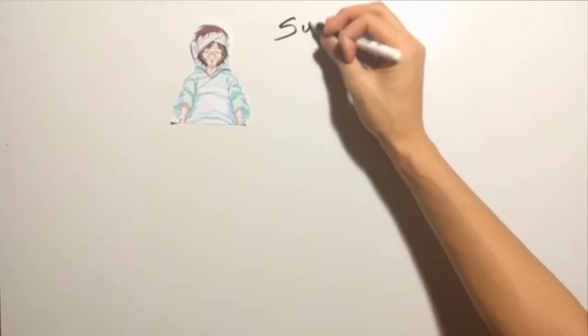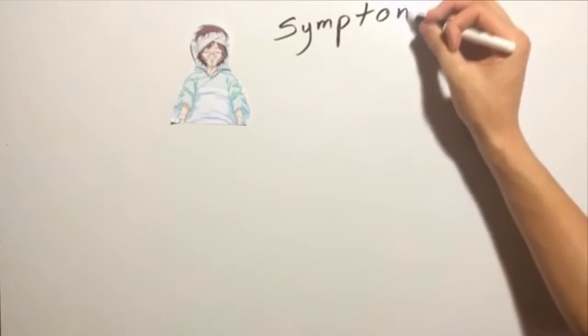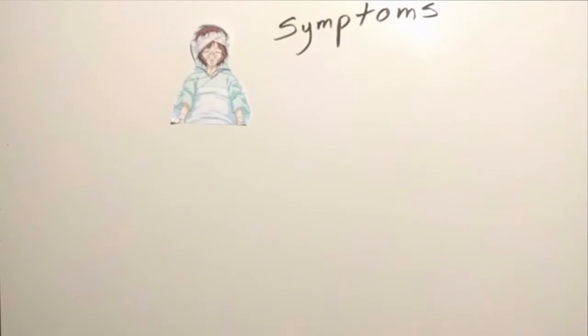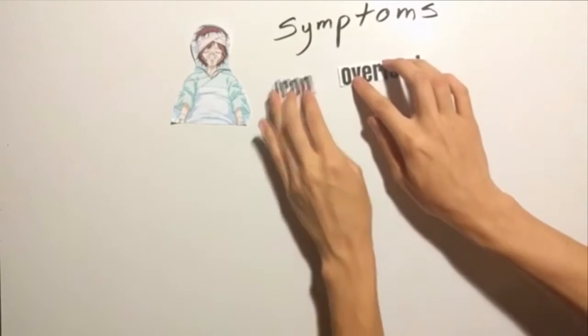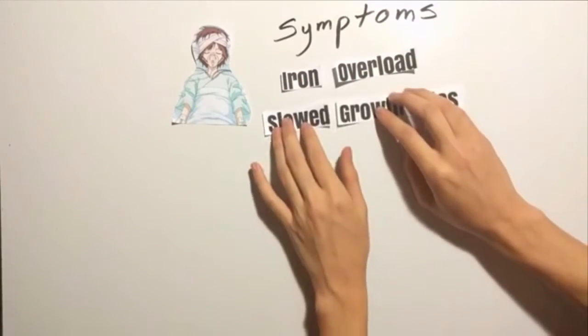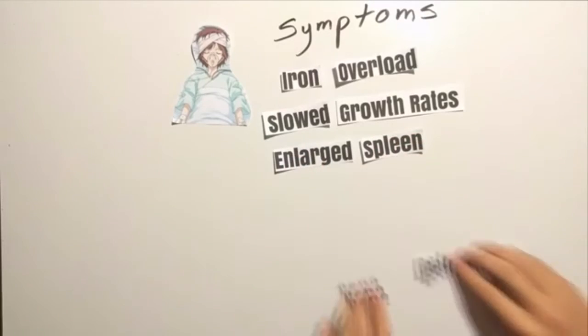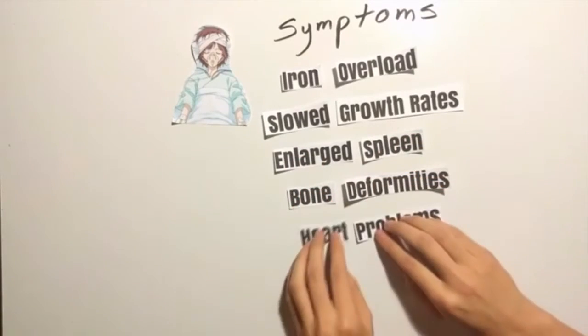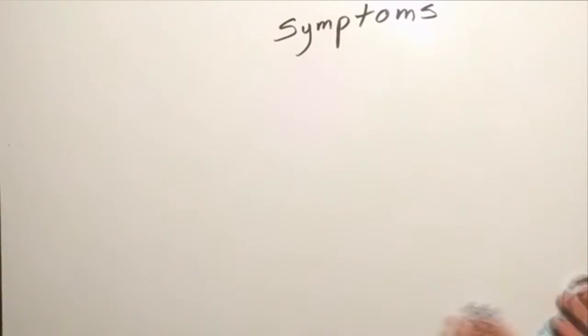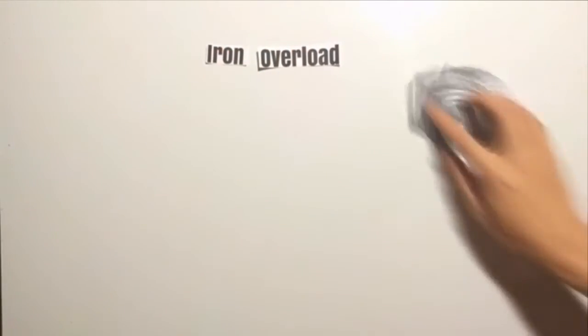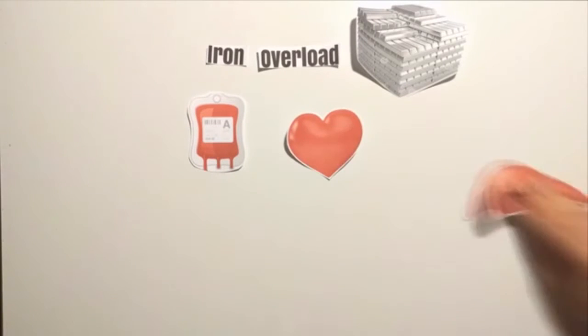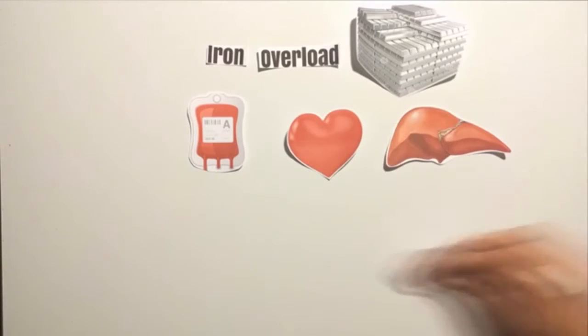What are some symptoms that can occur with thalassemia? Symptoms of thalassemia consist of iron overload, bone deformities, enlarged spleen, slowed growth rates, and heart problems. Iron overload can occur from the disease itself or frequent blood transfusions. Too much iron can result in damage to the heart, liver, and endocrine system, which includes glands that produce hormones that regulate processes throughout the body.